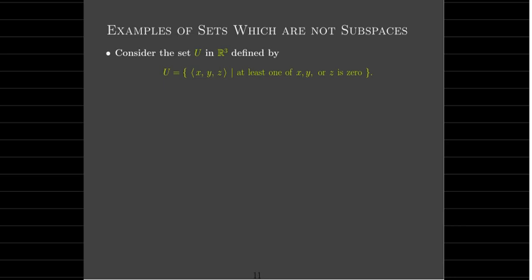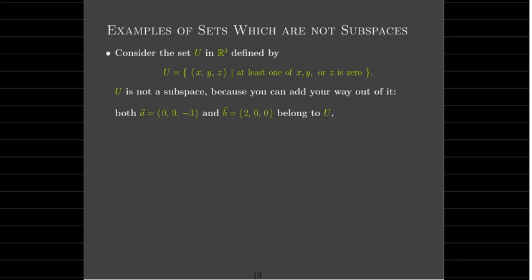Let's look at a different set. This is a set U in R3 where the defining property is that at least one of the components is 0. It's not a subspace because you can add your way out of it. For example, vector a has components 0, 9, negative 3 — it belongs to U. Vector b has components 2, 0, 0 — it also belongs to U. But if I add them together, I get the vector 2, 9, negative 3. None of those components are 0, so the sum is not in U.